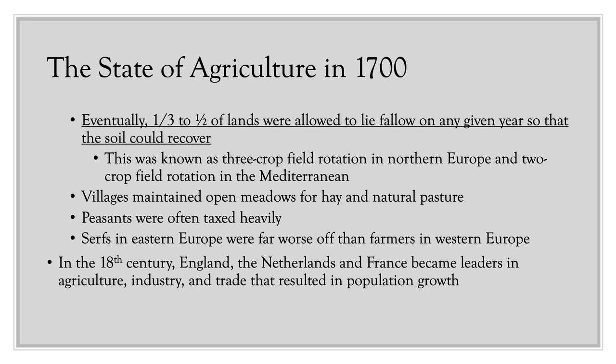Basically, one-third to one-half of lands were allowed to lie fallow each year so the soil could recover. This became known as three-crop field rotation in northern Europe and two-crop field rotation in the Mediterranean. While necessary to allow soil to recover, this did not allow for maximum food production. Villages also maintained open meadows for hay, natural pasture, and animal grazing.